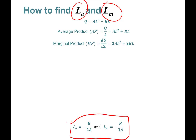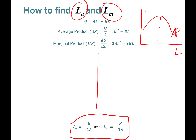So how can we find these two points? You don't have to memorize this, but I think it's useful to know. Let's start with finding LA — the point at which average product diminishes. The average product curve looks like this, and we're trying to find this maximum point of the average product curve. We call this LA.